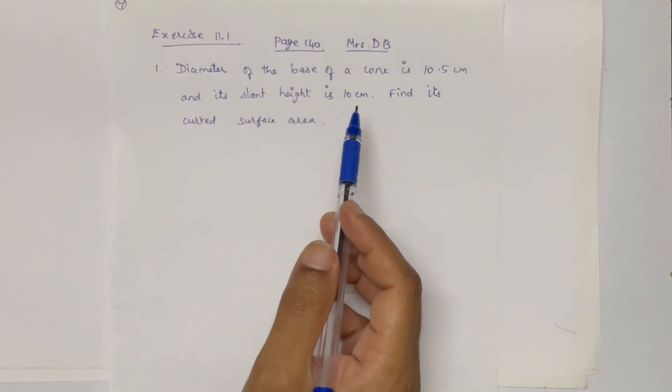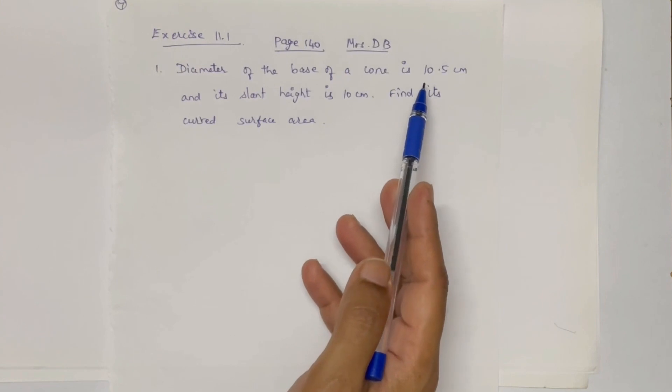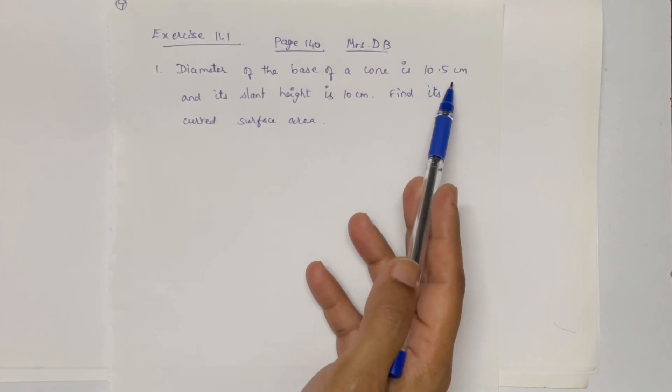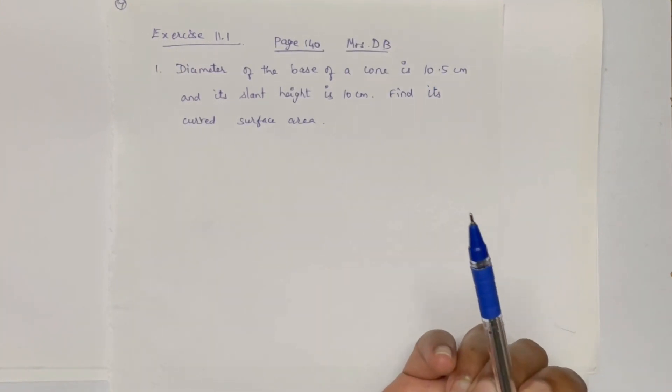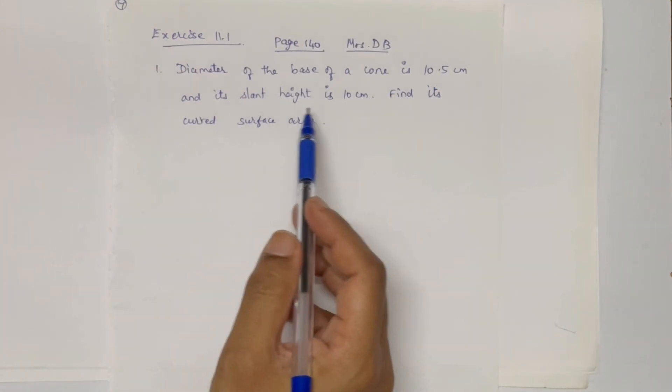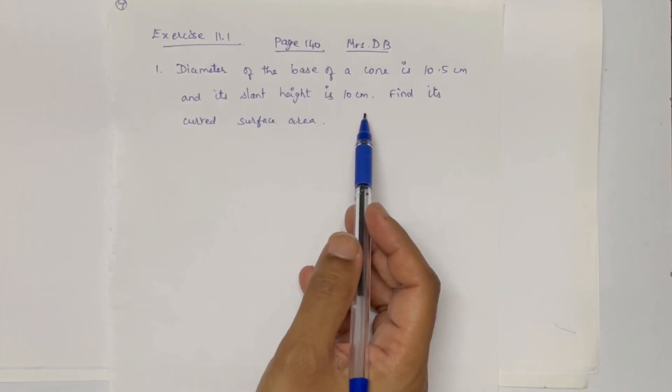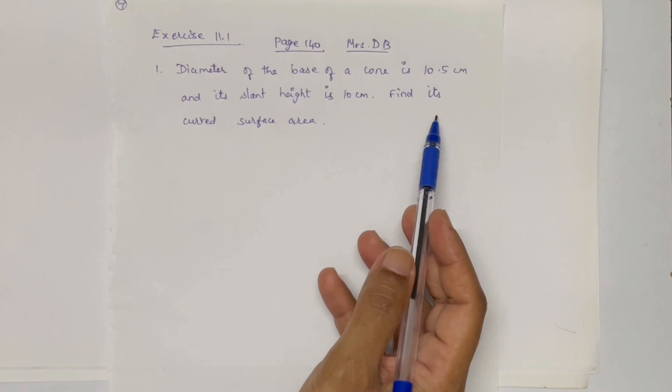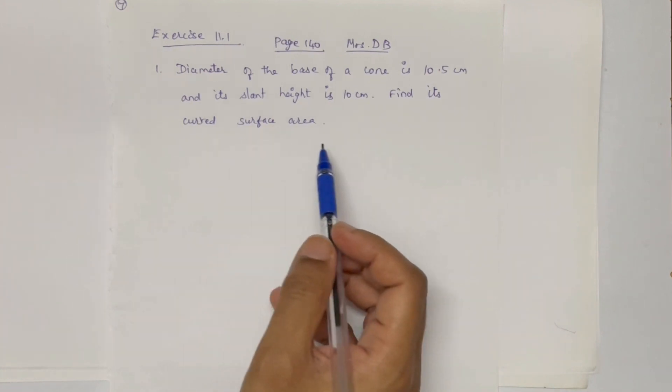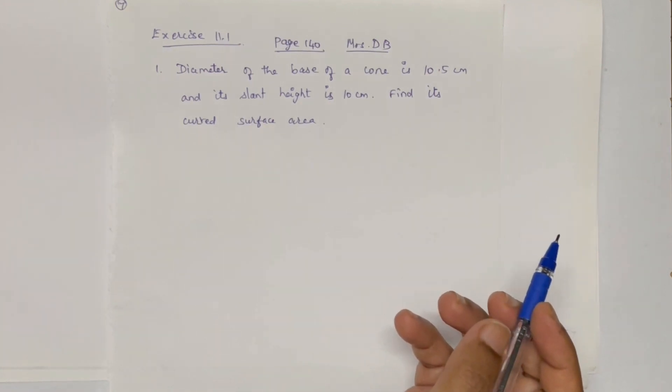The diameter of the base of a cone is 10.5 cm and its slant height is 10 cm. Find its curved surface area.